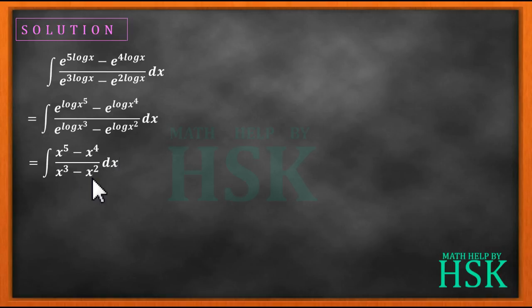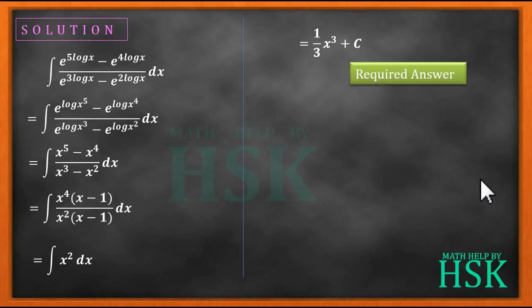From the numerator I can take x to the power of 4 common, and from the denominator I can take x square as common. So I'm going to get this as x to the power of 4 times x minus 1, upon x square times x minus 1. So x minus 1 cancels out. This will be equal to x square dx. Integration of x square is equal to 1 by 3 x cube plus c, so this is my required answer.